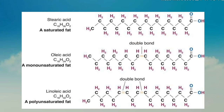For unsaturated fatty acids, when there is a double bond in the fatty acid chain, the structure becomes curved or bent. When there is only one double bond, it is monounsaturated. When there are two or more double bonds, it is polyunsaturated.